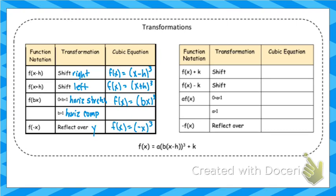One thing to note: negative x in parentheses cubed is the same as negative x cubed. That's related to how this function is an odd function with origin symmetry — if you reflect this graph over the y or the x, it looks the same either way. That's a special property of the cubic function.